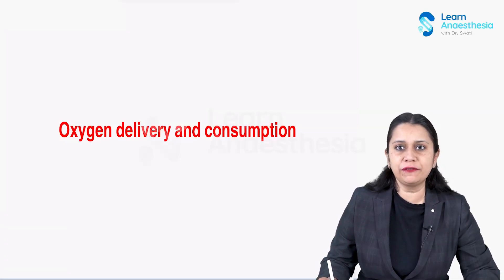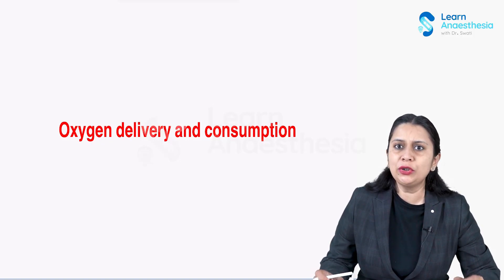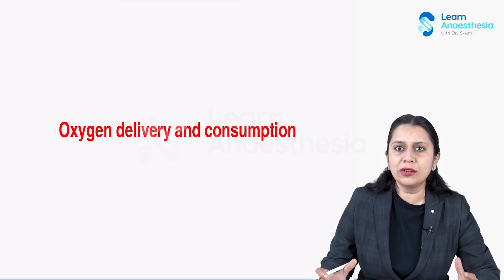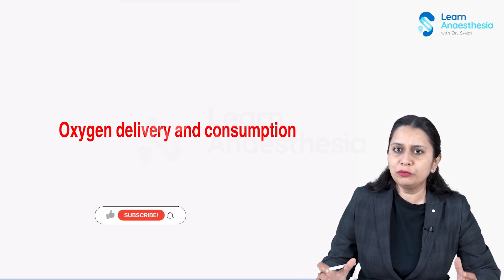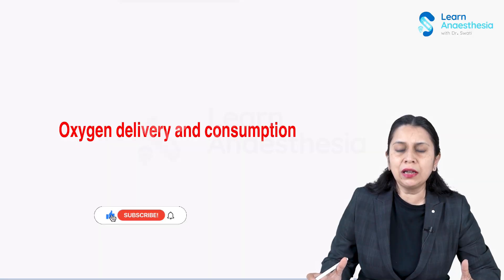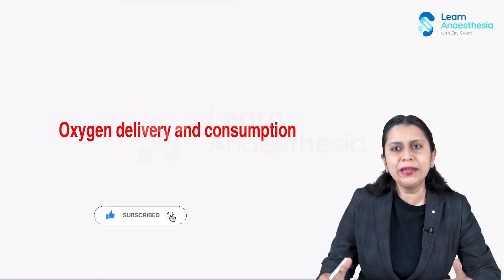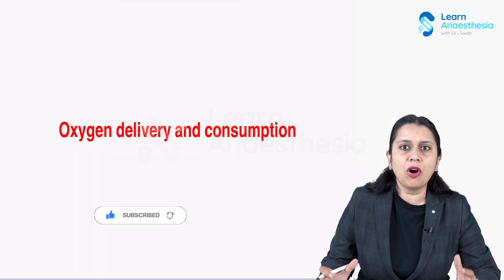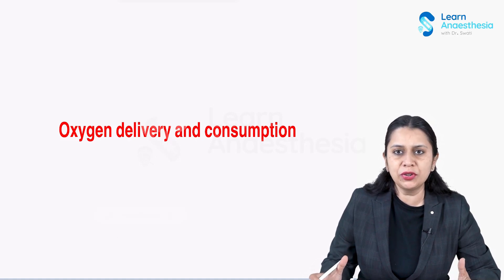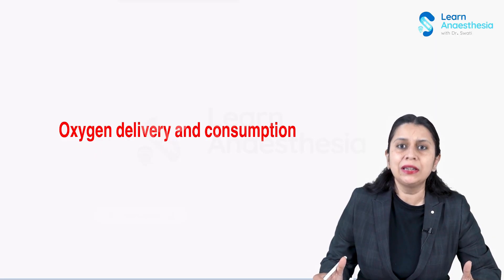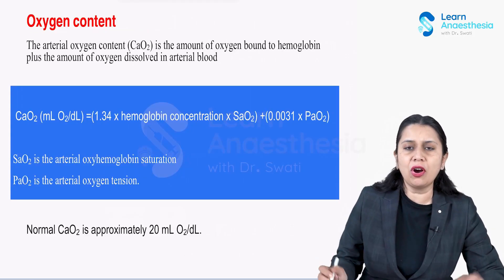We'll talk about oxygen flux, that is oxygen delivery. To understand oxygen delivery, we need to understand the oxygen content of the blood, because blood is the vehicle by which oxygen is transferred from the alveoli to the tissues. We will discuss arterial blood oxygen content, how to calculate oxygen delivery, oxygen consumption, the oxygen extraction ratio, and how these are changed in disease conditions.